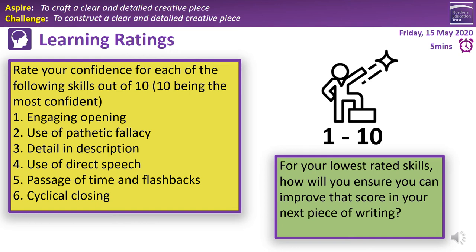Skill three: can you add detail into description — metaphors, similes, devices, vocabulary — to extend your writing, not like the 'what a bad one looks like' from earlier? Skill four: use of direct speech — can you use it accurately, following our four rules, with short bits of speech? Skill five: passage of time — can you include flashbacks, maybe even flash forwards, to develop the character or story? Skill six: cyclical closings — can you refer back to the opening in your closing paragraph to create a sense of a circle, much like the hero's journey structure we watched?